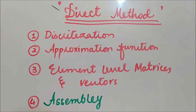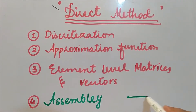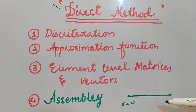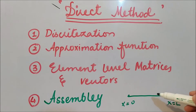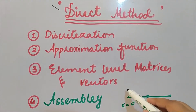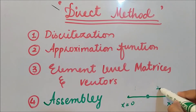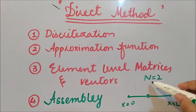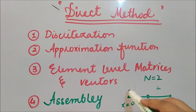So far we have seen a bar of length L, and we know from the first step of discretization that we have to divide the structure into sub-elements. Here the whole bar of length L is divided into two elements, giving us three nodes.